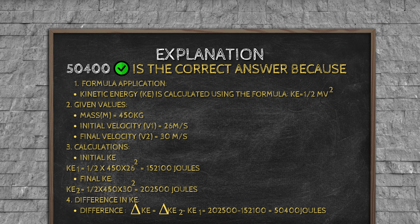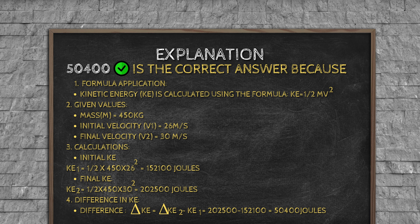Explanation: 50,400 is the correct answer because: 1. Formula application: Kinetic energy (K) is calculated using the formula K equals 1 divided by 2 M V squared. 2. Given values: mass M equals 450 kg, initial velocity V1 equals 26 m/s, final velocity V2 equals 30 m/s. 3. Calculations. Initial KE: K1 equals 1 divided by 2 times 450 times 26 squared equals 152,100 joules. Final KE: K2 equals 1 slash 2 times 450 times 30 squared equals 202,500 joules. 4. Difference in KE: Delta K equals K2 minus K1 equals 202,500 minus 152,100 equals 50,400 joules.